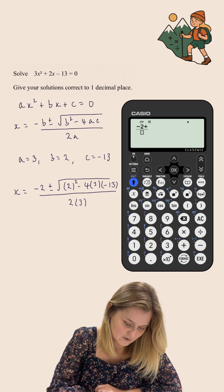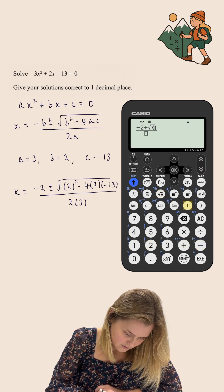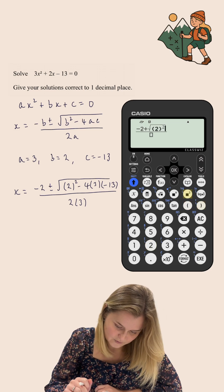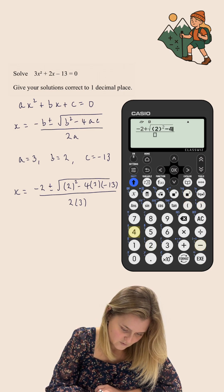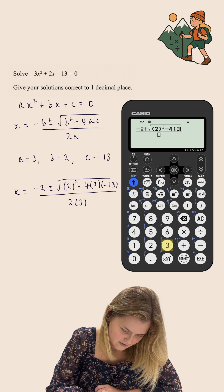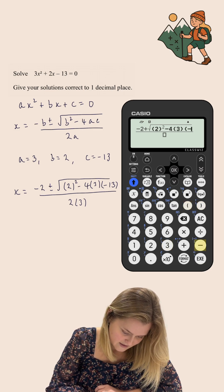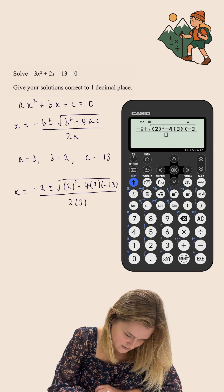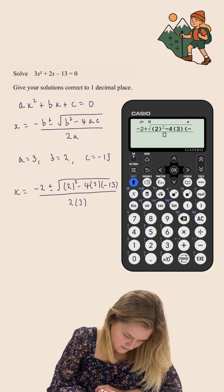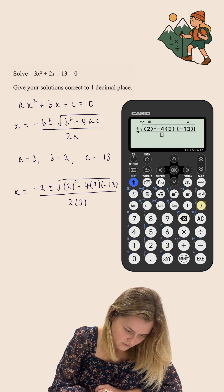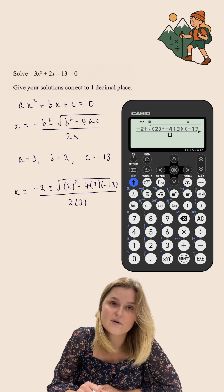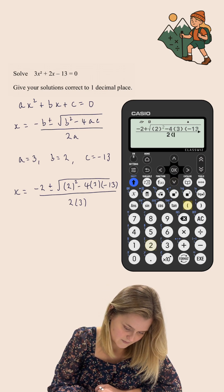I'm going for the plus option first, the square root of 2² - 4×3×(-13), and then all of that is over 2×3.